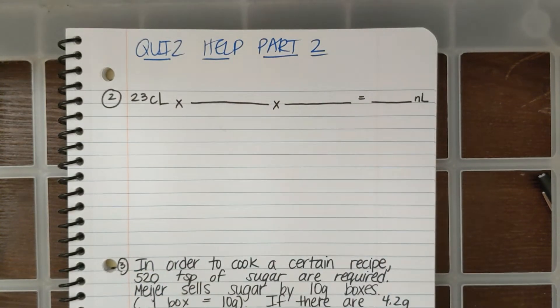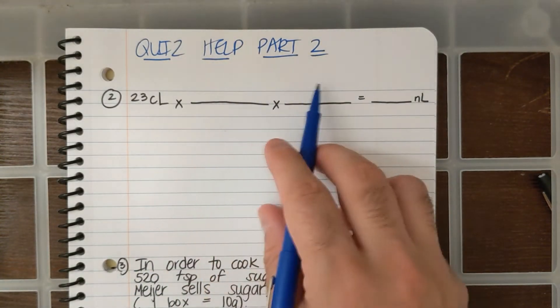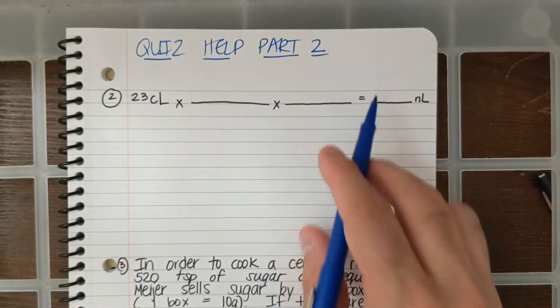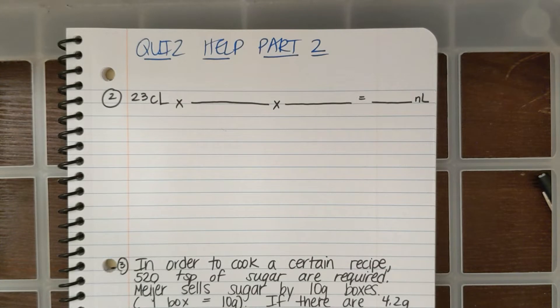I also put two fractions here. That means I'm going to need to do two steps, and I do not have a direct conversion between centiliters and nanoliters. If you look at any of your papers, you're going to see that there are no direct conversions between centiliters and nanoliters.